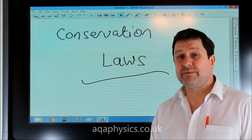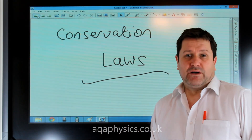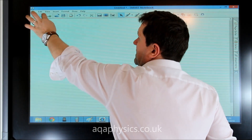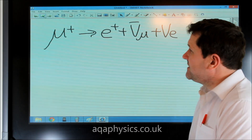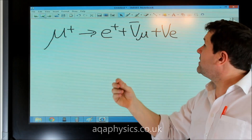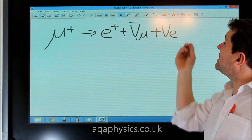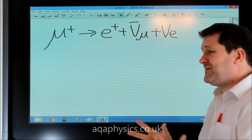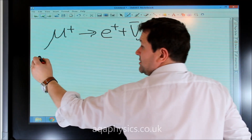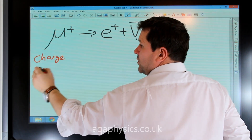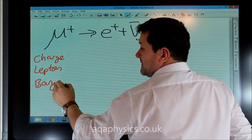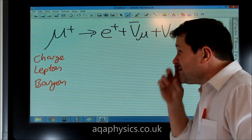Very straightforward concept, as long as we remember all of our particles and where they all belong in the table. So if we look at an interaction, we could look at charge, we could look at lepton number, and we could look at baryon number. We could also look at strangeness, and I'll do that later on.